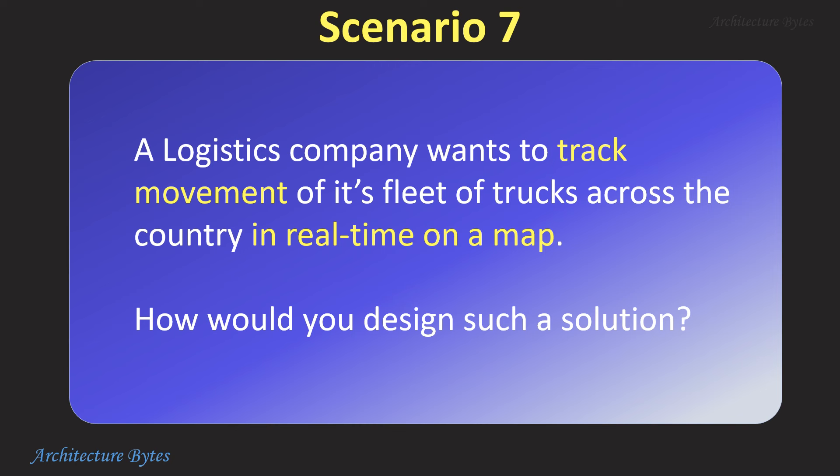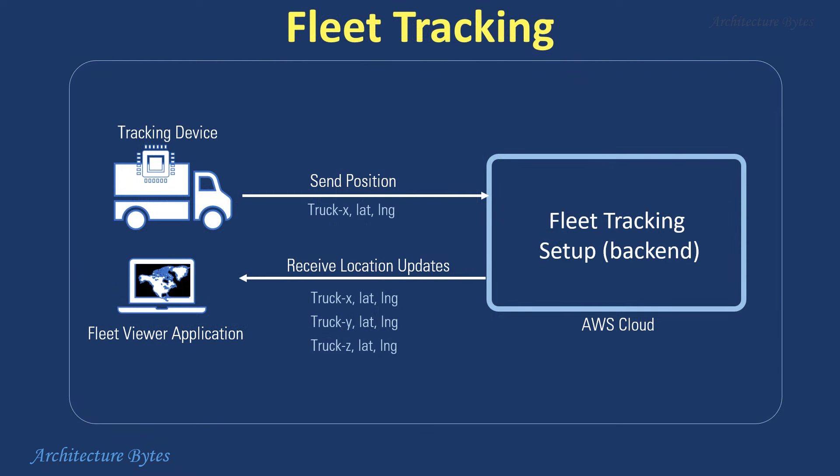A logistics company wants to track the movement of its fleet of trucks across the country in real-time on a map. How would you design such a solution? Every truck has a tracker device that sends its identity and geographical position every few seconds to our backend tracking setup as a JSON message. The tracking device could be a dedicated IoT device or simply the mobile phone of the driver.